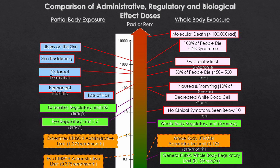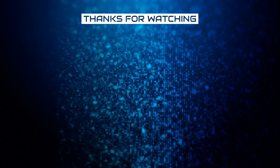Looking at a comparison of effective dose: in the bottom right green box is where the general public falls — whole body regulatory limit of 0.1 rem (100 millirem) per year. Two boxes up is the whole body limit for a radiation worker. Importantly, no clinical symptoms are seen below 10 rem — so your annual limit of 0.1 rem is well below the threshold where any health issues would begin to appear.